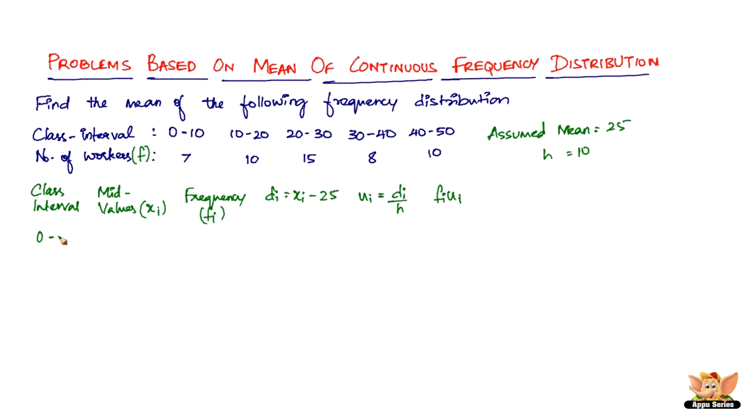It starts off with 0 to 10, 10 to 20, 20 to 30, 30 to 40, 40 to 50. And then the mid values are going to be 5, 15. Mid value is how? 10 plus 0 divided by 2 is 5. The middle value of 10 and 20 is 15, the middle value of 20 and 30 is 25, the middle value of 30 and 40 is 35, the middle value of 40 and 50 is 45. So that's how you find the mid values.